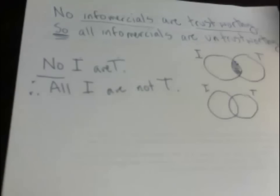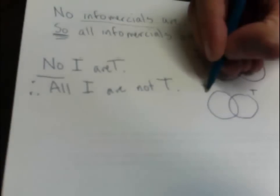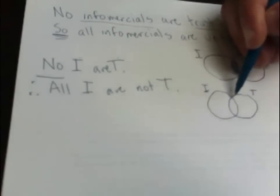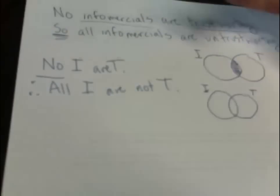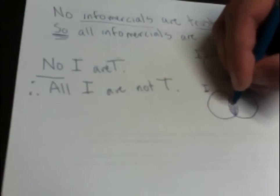I, T. All I are not T. It says everything that's inside the I circle is not also inside the T circle. So we have to push everything in the I circle out of the T circle. We do that by shading this region in.